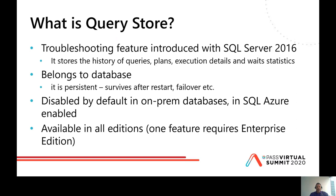Query Store is a troubleshooting feature introduced with SQL Server 2016, extended in 2017, and a bit in 2019. It stores the history of queries, execution plans, execution statistics details such as query duration, CPU time, logical reads, and so on, and from SQL Server 2017, wait statistics. This is a database feature. All this info is stored in a user database and it is persistent even in case of server restarts, failovers, or crashes.